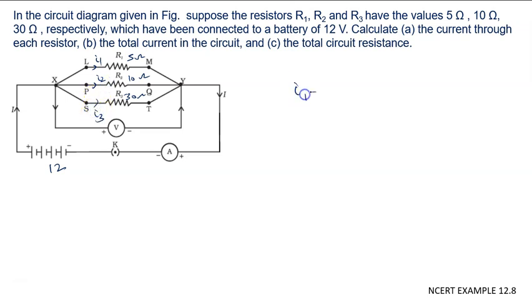For part A, we will write I1 equal to V upon R1. What is the value of V? That is 12 volt, R1 is 5. We will calculate it is 2.4 ampere.